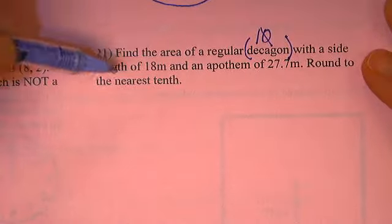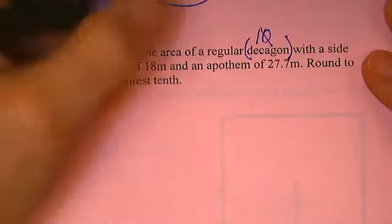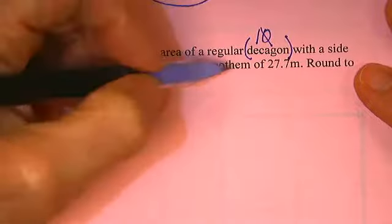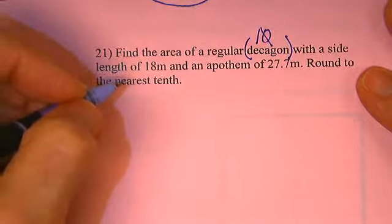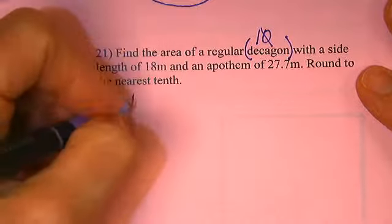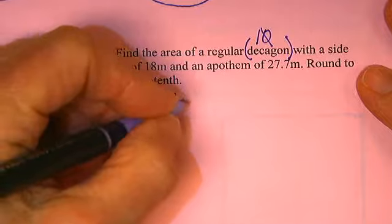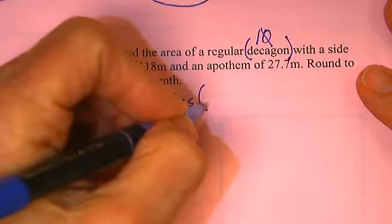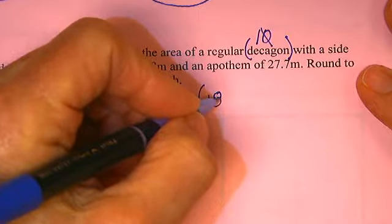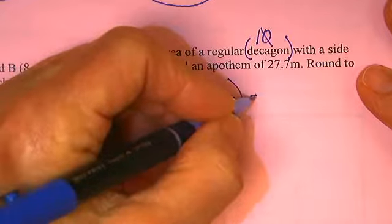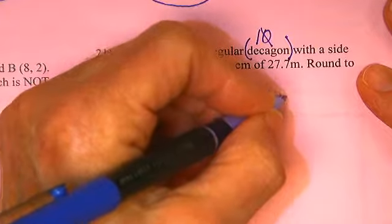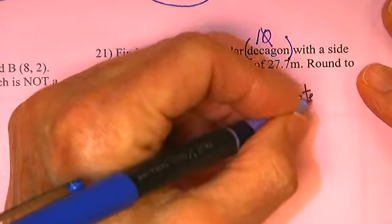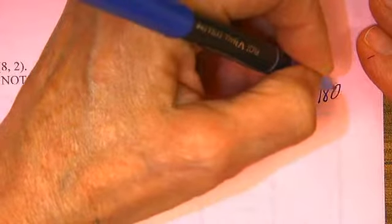A side length of 18 meters and an apothem of 27.7 meters. So, if we have 10 sides and each side length is 18 meters, then my perimeter is equal to 180 meters.